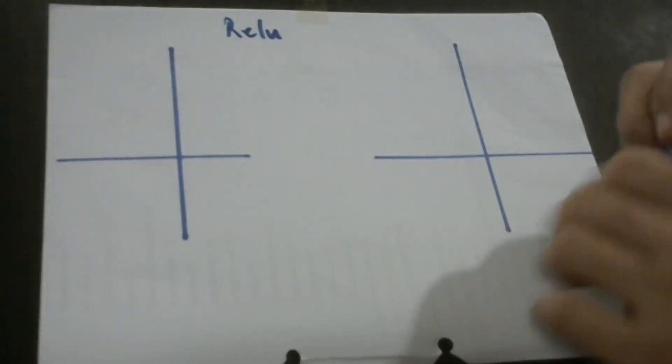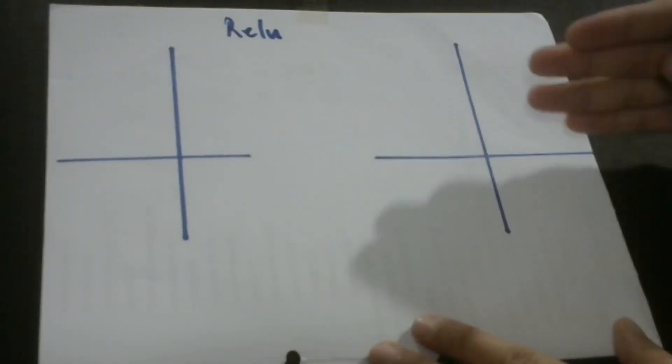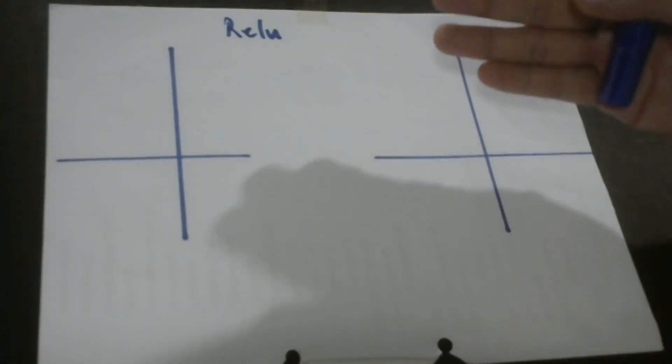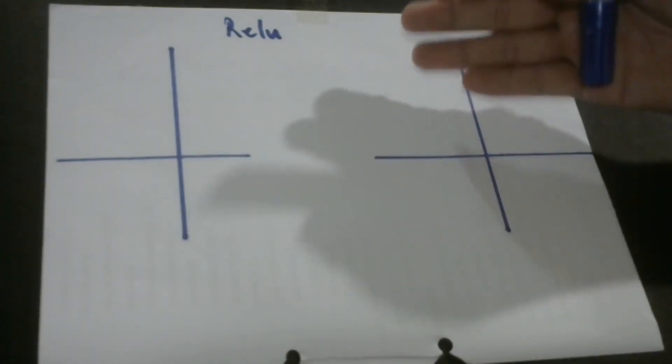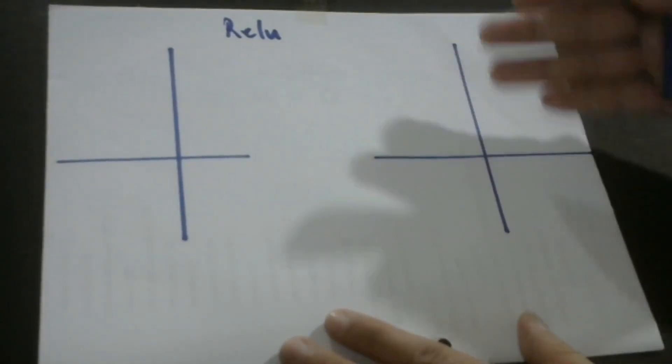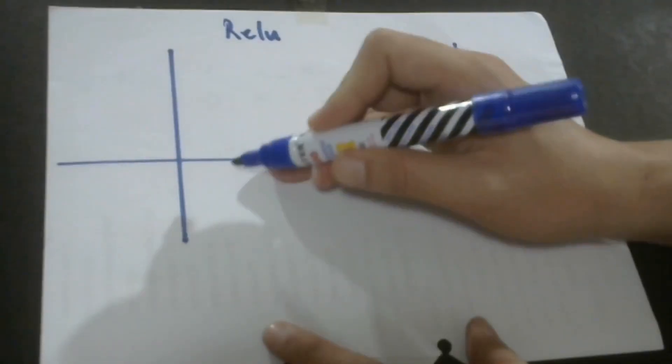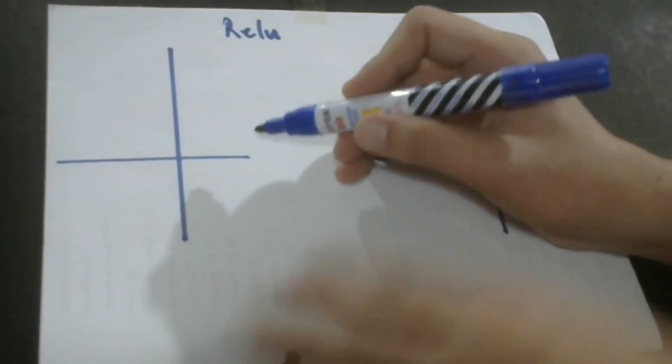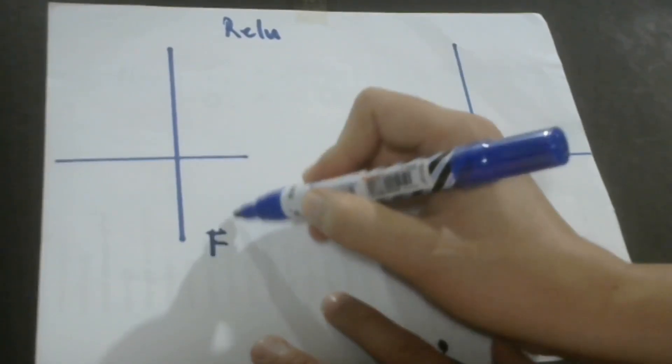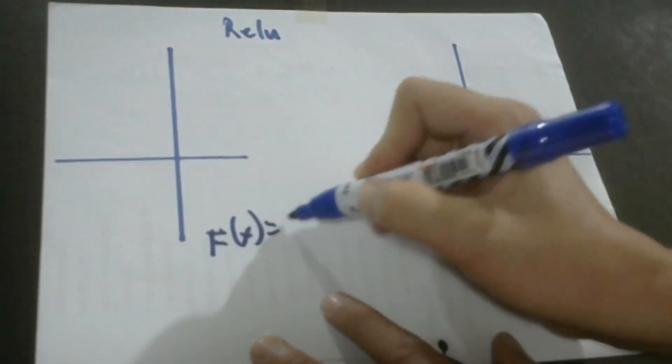Now, before we go to the proper understanding of RELU, let's first go back to the linear activation function so that we would be able to properly understand what our RELU is. So, we said that mathematically, the linear activation function has this formula, F, or the function of X, is equal to X.